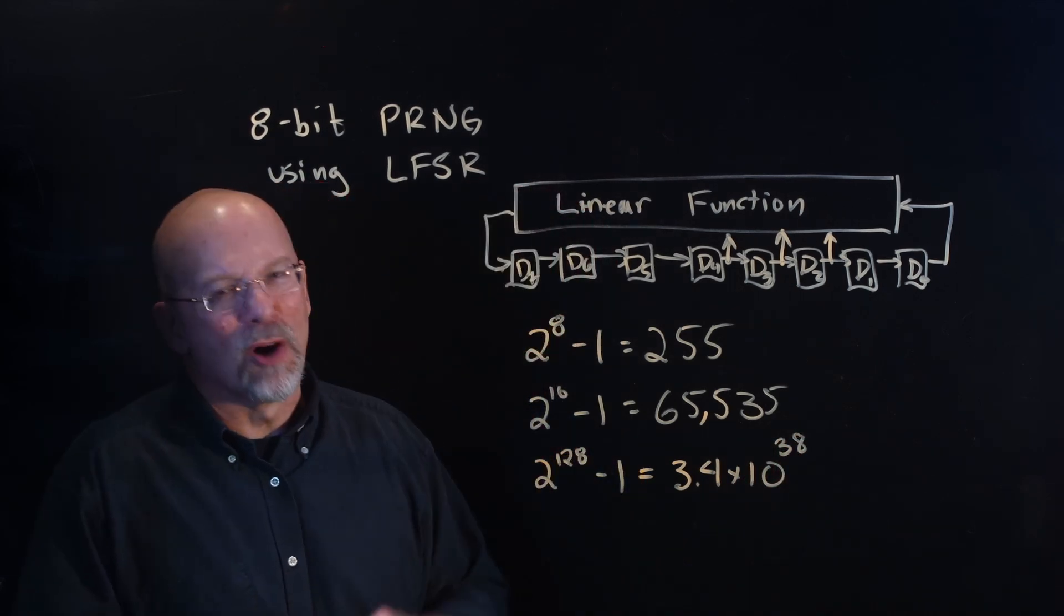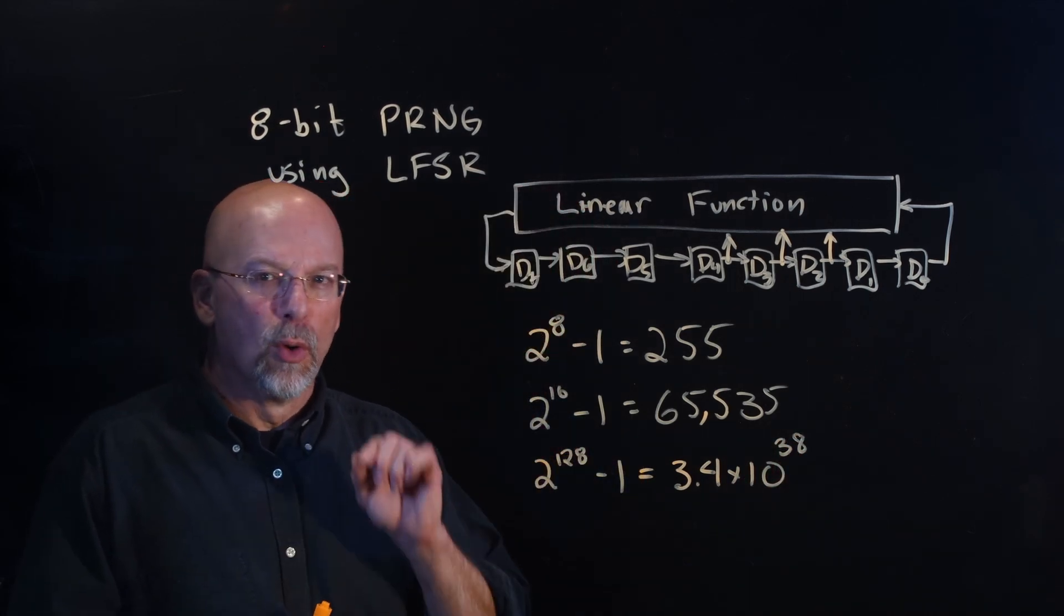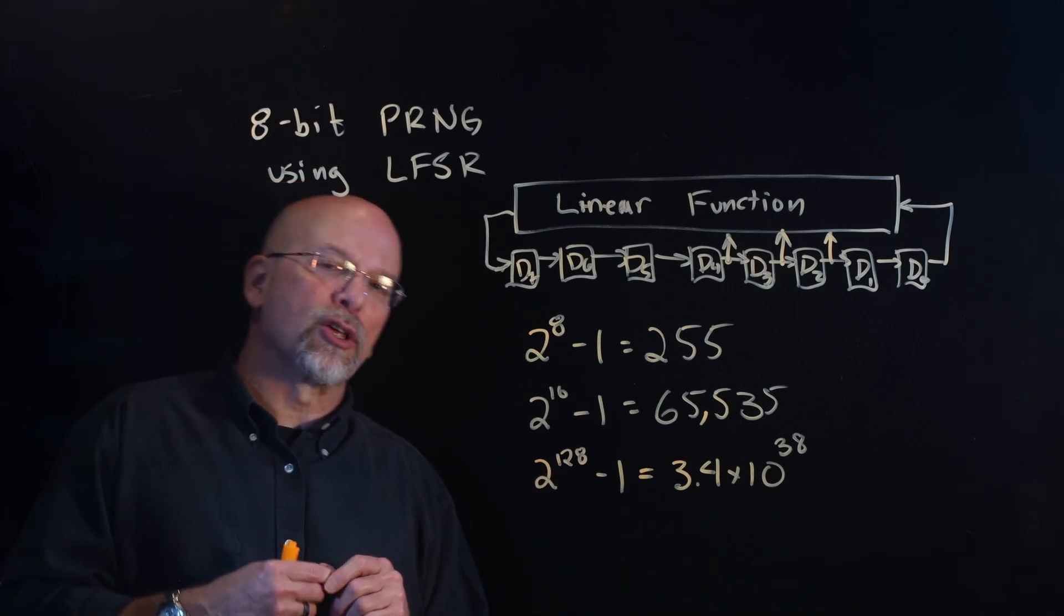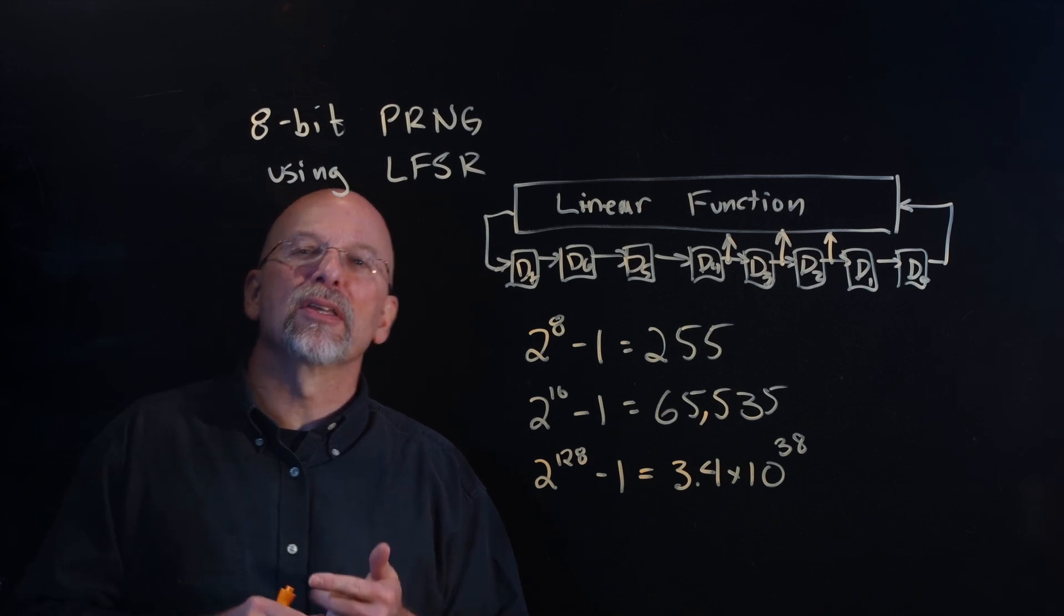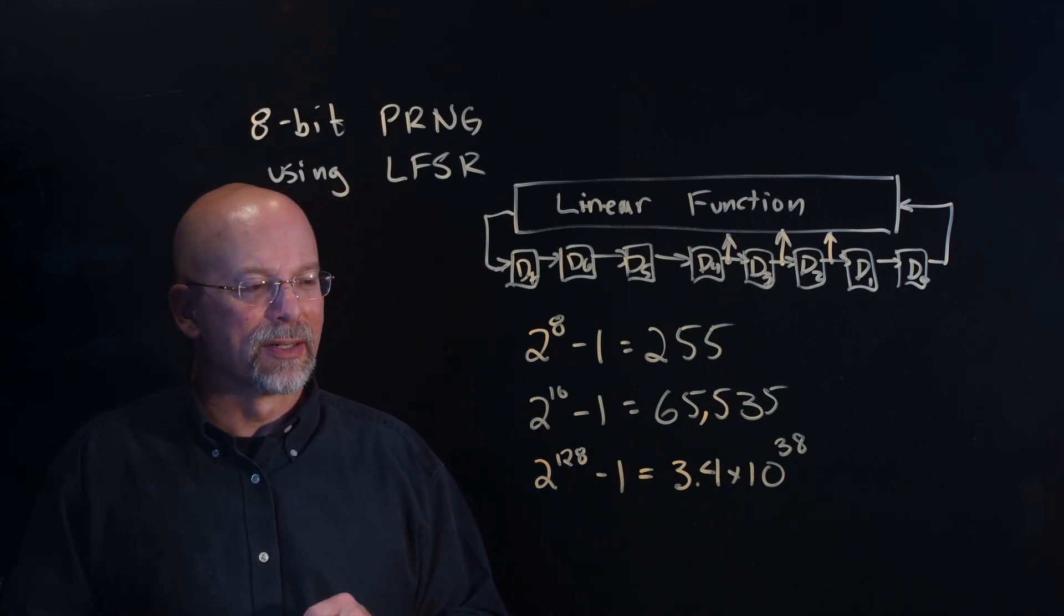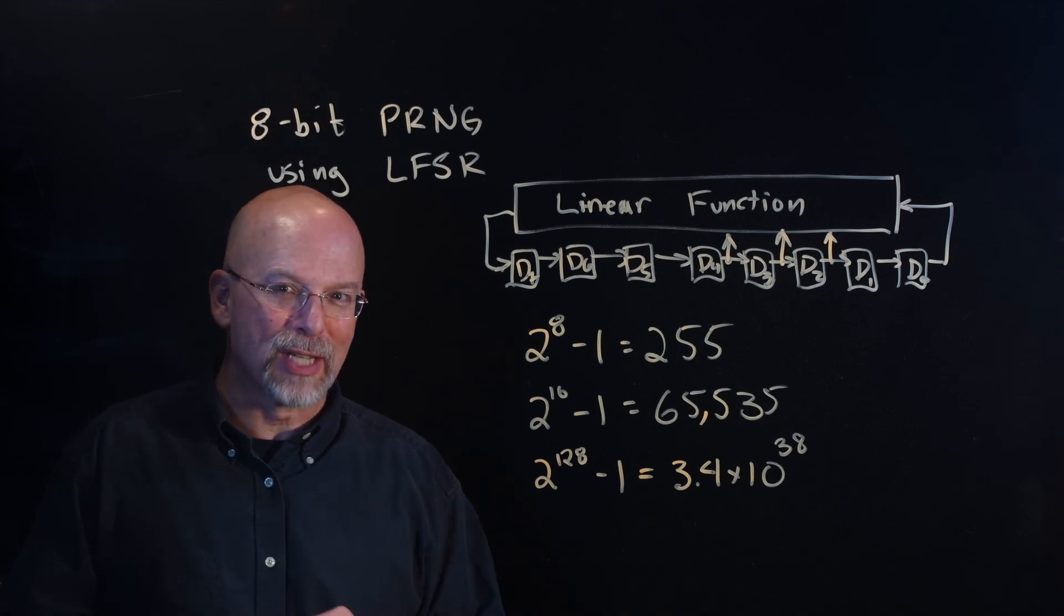What that's going to give you is a period of 3.4 times 10 to the 38th. The number's pretty big. In fact, it's so big that if you wanted to generate a new 128-bit random number every second, it would take you 84,000 million, million, million, million years before you were done with the list. That should be big enough for most applications.